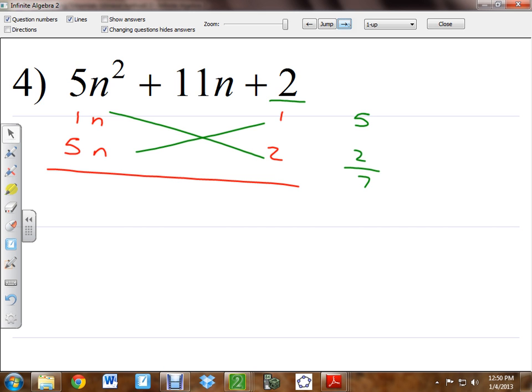So, what I'm going to do is, I'm going to leave that there. Just because I like to, you know, know what I've already tried. And I might try something else. One n and five n. And then instead of one and two, I'm going to go ahead and switch these up and make it two and one. Let's try this cross multiplication. Five times two is ten. Right? One times one is? One. And what do those add to? Eleven. So, that works.